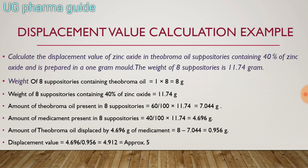Example: Calculate the displacement value of zinc oxide in theobroma oil suppositories containing 40% zinc oxide, prepared in a 1 gram mold. The weight of 8 suppositories is 11.74 gram. Solution: Weight of 8 plain theobroma oil suppositories = 8 × 1 gram = 8 gram. Weight of 8 suppositories containing 40% zinc oxide = 11.74 gram.